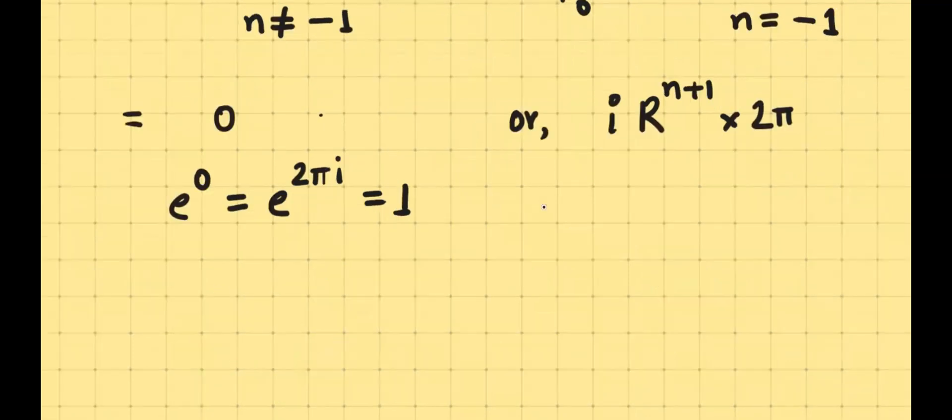In a special case, when integrated over the unit circle, in that case, R is equal to 1. So if R is equal to 1, that is, when integrated over the unit circle, or when the contour is the unit circle, then the answer is going to be 2πi.